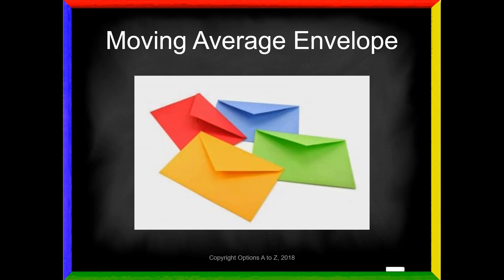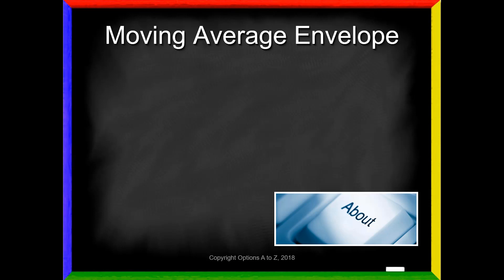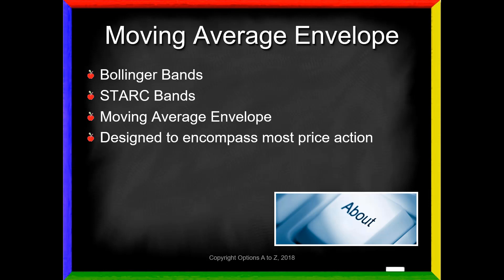The Moving Average Envelope, like many of the other banded type of indicators such as Bollinger Bands and Stark Bands, which we've talked about before, is very similar in the fact that they are all designed to encompass most of the price action. It just gives you a nice visual of saying where do most of the prices occur most of the time.